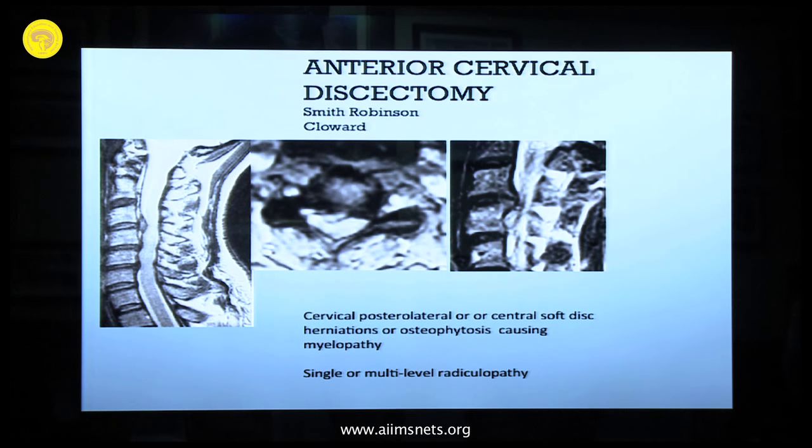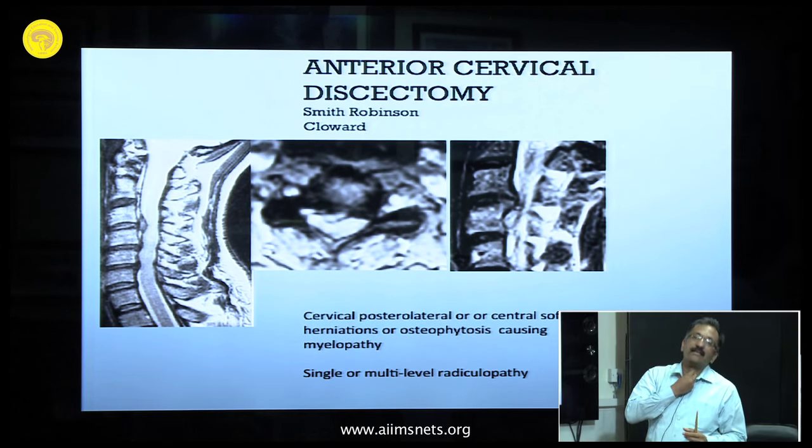What Cloward did was use a cylinder. You first put the cylinder, take a dowel of tissue from the iliac crest, and drill it through the cervical spine — the exact same size dowel is taken out and put in. That is the Cloward technique. Smith-Robinson, on the other hand, means you drill and then take a wedge of bone and fix it there. Both techniques are equally useful.